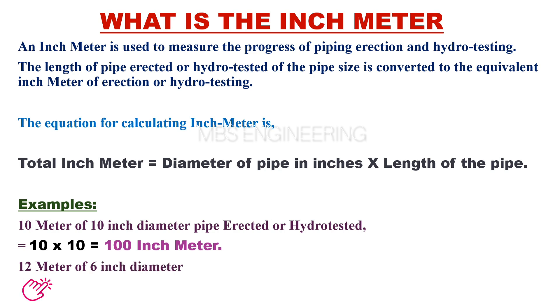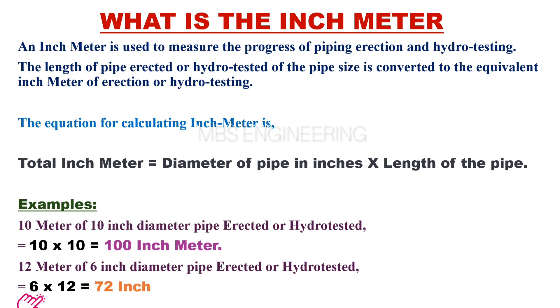To calculate the inch meter for 12 meters of a 6-inch diameter pipe: the total inch meter equals 6 multiplied by 12. Therefore, the total is 72 inch meters.